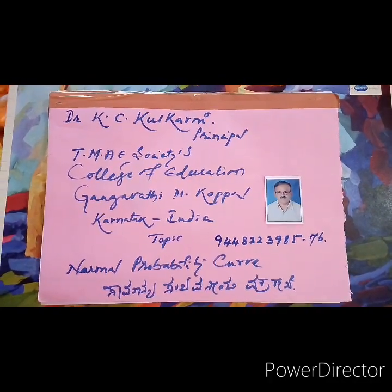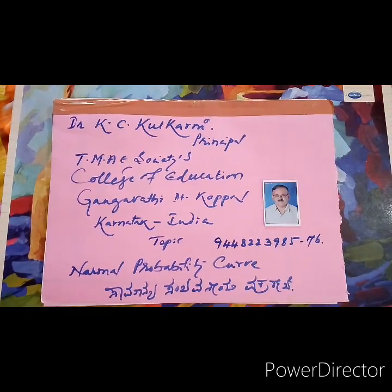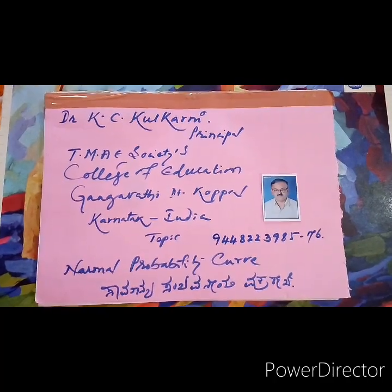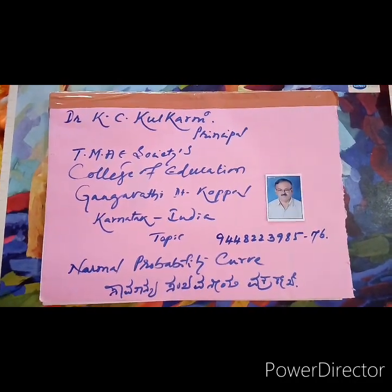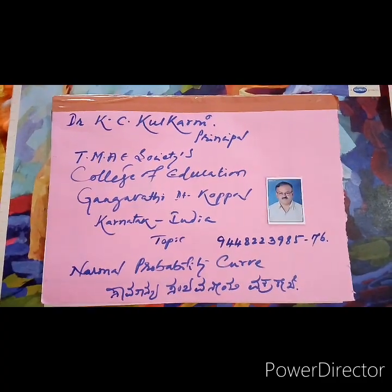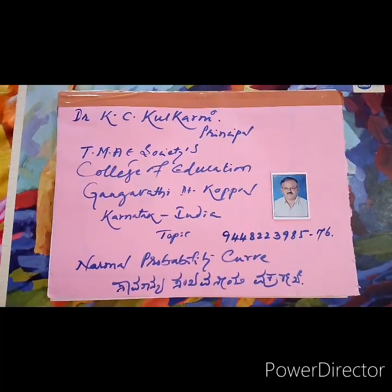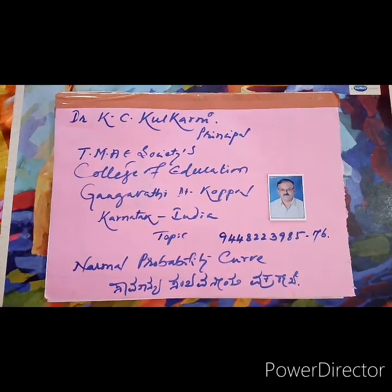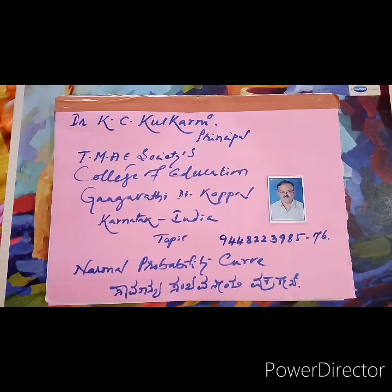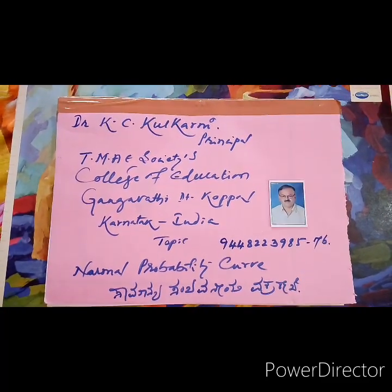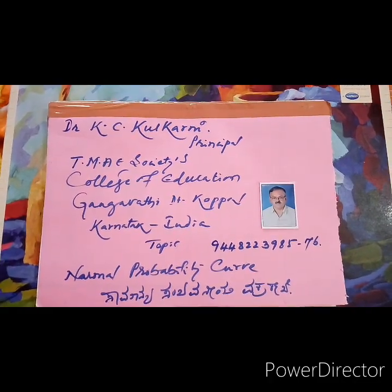Today, I take a very simple concept, that is properties of normal probability curve. Usually in the classroom, we find three categories of students. One category is Dull Students, another category is Average Students, and the third category is Genius Students.